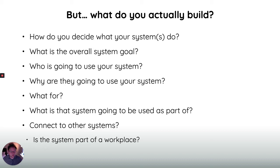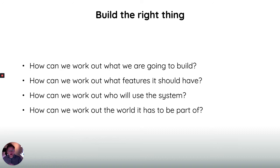This is particularly the case if your system is part of a workplace. For example, the registration of yourself as a student has to feed into the system that tracks your grades and lets you see them, and also the system that gives you security access to services in the library. So you have to build things so they actually fit with the world they're going to be in. I call this building the right thing — working out what to build, what features it should have, who's going to use the system, and the world that system is going to be part of.